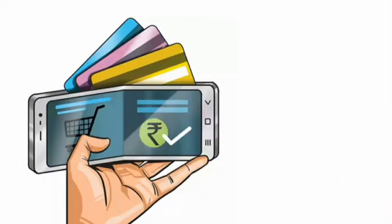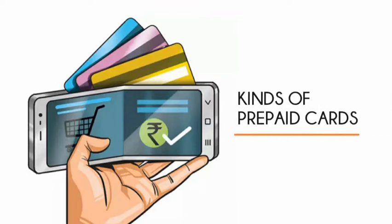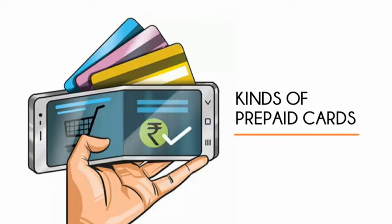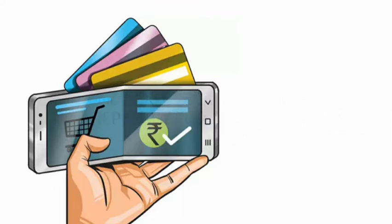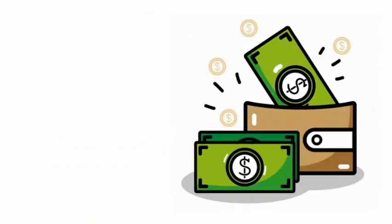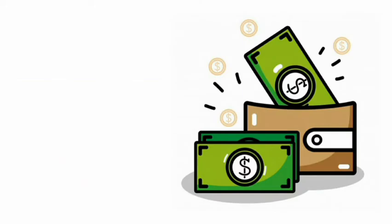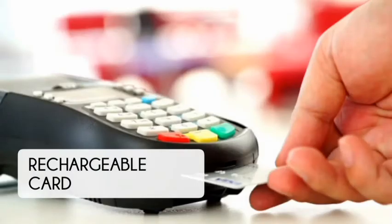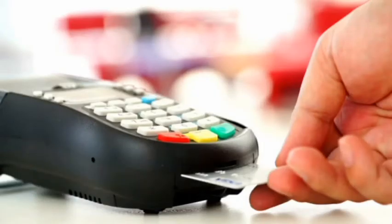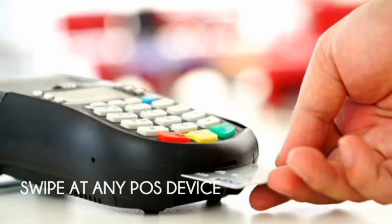There are different kinds of prepaid cards used for various purposes, and each card has a different kind of usage. It depends on the banks and the organizational firm issuing these cards. The first card is the pay direct card, which is used to pay salaries of employees. Amounts can be easily loaded and you can pay your workers easily. You can also easily withdraw money with this card.